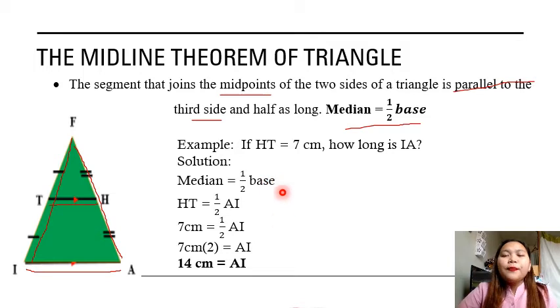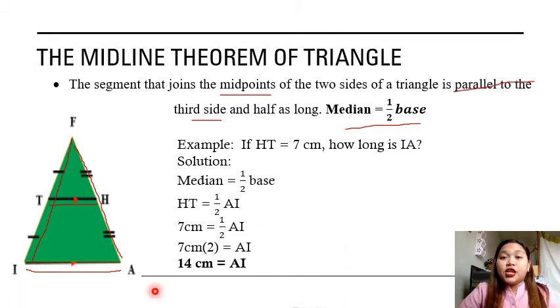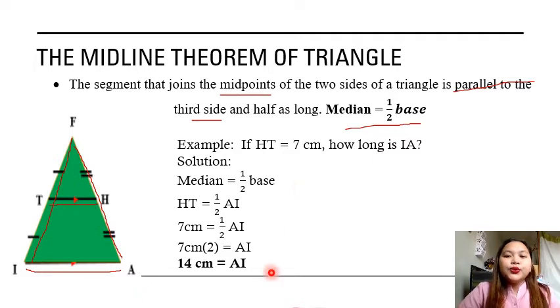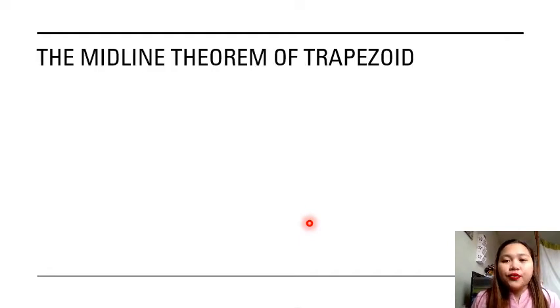When the median is the unknown, just multiply one half times the measurement of your base, which is AI. Let us now discuss the next one — the midline theorem of a trapezoid.